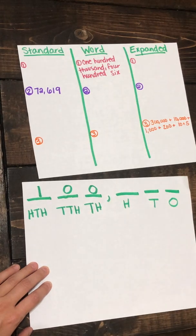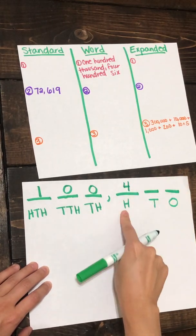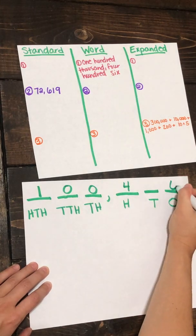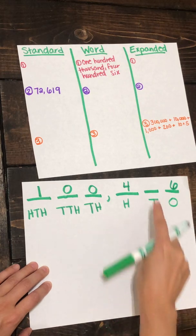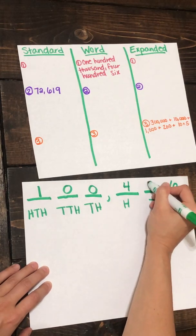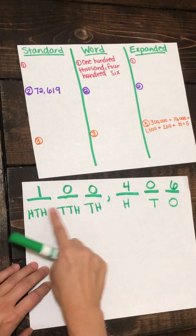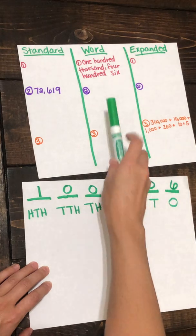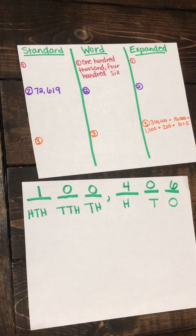Now I have four hundred — that tells me I need to put a four in the hundreds place. Six — I know that is plain old six ones. That also tells me I need to put a zero in my tens place. So I've written the standard form one hundred thousand four hundred six to match my word form one hundred thousand four hundred six.